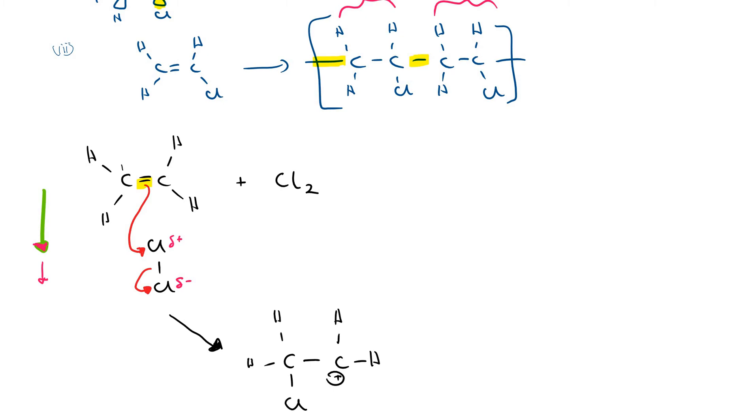And as this bond here breaks, the electrons that were in the bond have jumped onto the chlorine atom here to form a chloride ion. So now that chloride ion actually has 8 electrons on its outer shell.